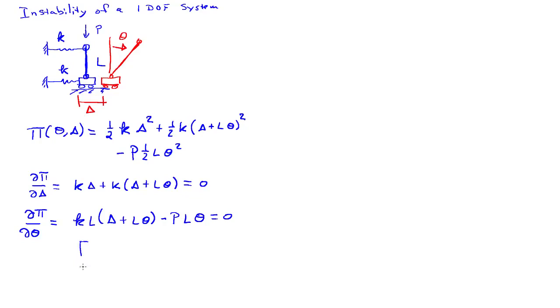So those are my equilibrium equations, and we can write them in sort of a matrix form here. So it will be 2K, K L, K L, K L squared minus P L times delta theta is equal to zero, zero. So I have a system of homogeneous equations, and I'd like to determine the load value P at which I can have a non-trivial solution.